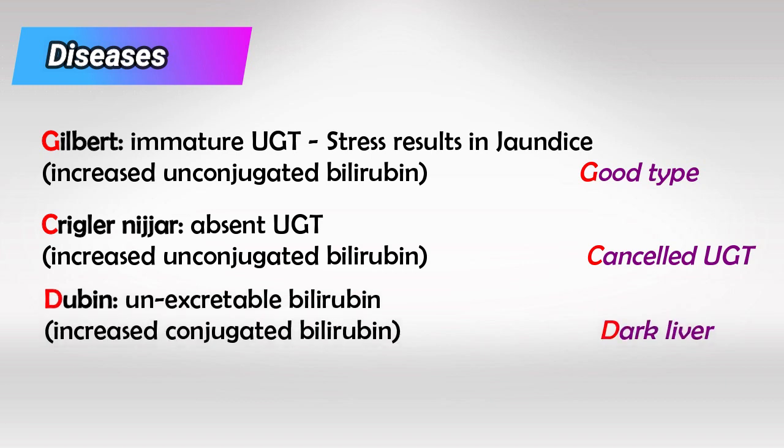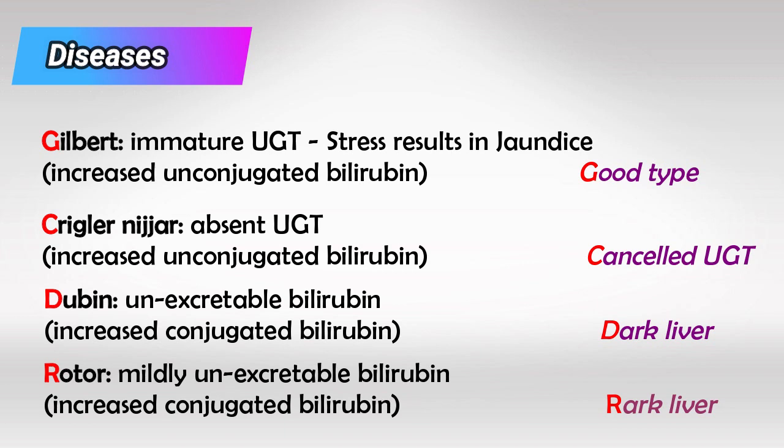In Dubin-Johnson syndrome, the enzyme is present and functioning, although we cannot excrete bilirubin. So we will have increased conjugated bilirubin. Because all of this bilirubin is concentrated in the liver, it causes a dark liver appearance, which is highly characteristic. Rotor syndrome is a mild form of Dubin-Johnson syndrome.